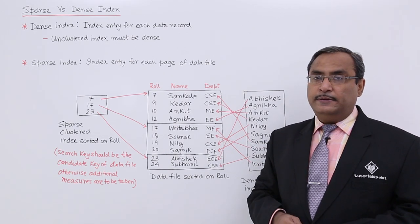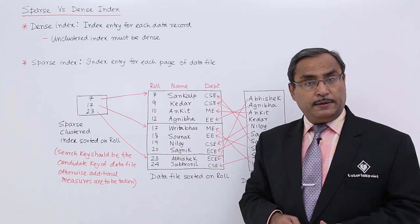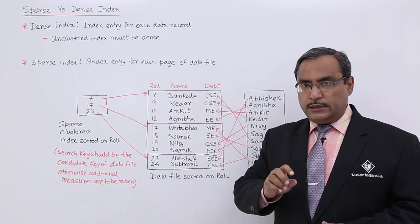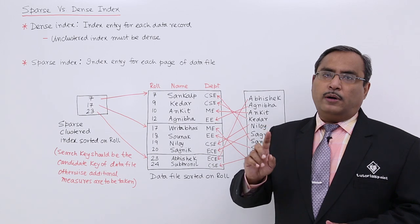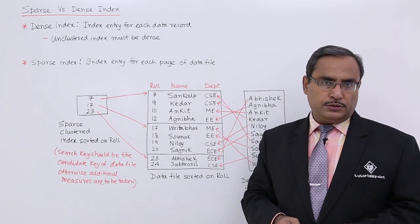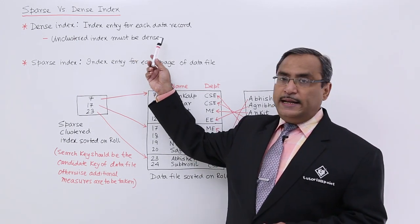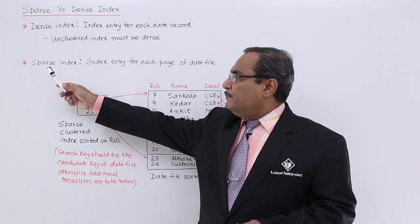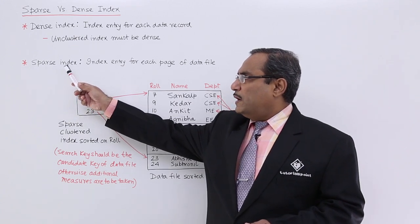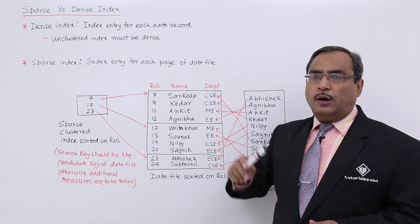In case of unclustered index, the order of index entries is not the same as the order of the corresponding records. That is known as the unclustered index and it must be dense. In case of sparse index, there is an index entry for each page of the data file.